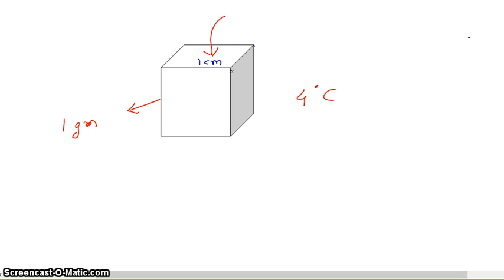Why does temperature matter in this case? Because as temperature increases, volume also increases. So the standard temperature is four degrees Celsius, and that's how the standard mass measurement unit in the SI system, one gram, came into existence.